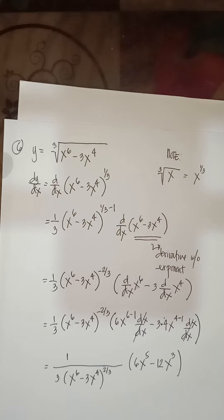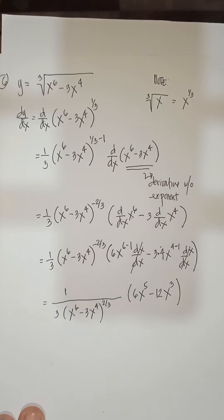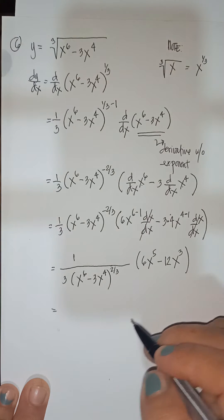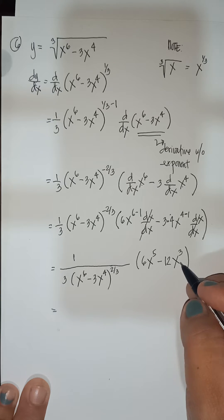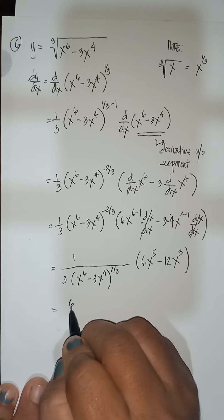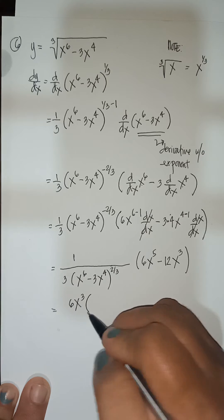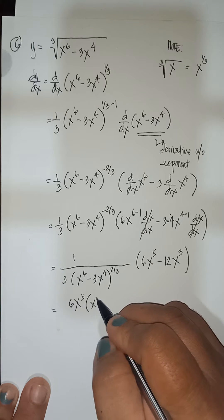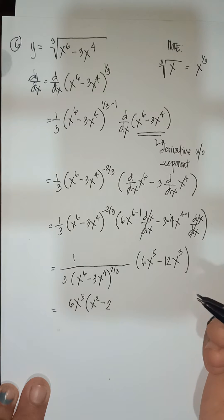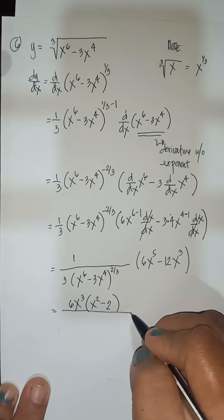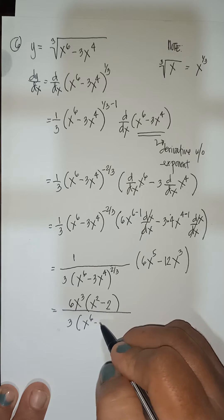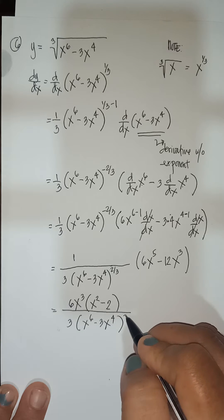Therefore you will have 1 over 3 times x to the 6 minus 3x to the 4th raised to positive 2/3 — because bringing it down makes the exponent positive — times 6x to the 5th minus 12x cubed.